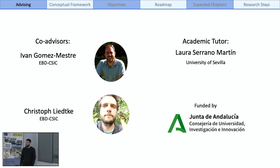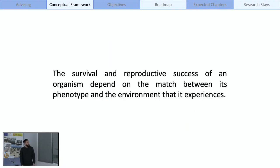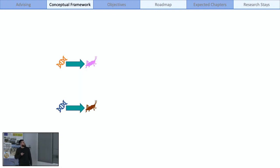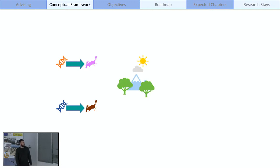This PhD is founded by the Junta de Andalucía. Now, I will describe the conceptual framework of the dissertation, starting with this sentence: the survival and reproductive success of an organism depends on the match between its phenotype and the environment that it experiences. That may sound a bit obvious, but it has a lot of important connotations — for example, how phenotypes are generated.